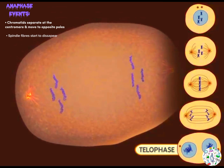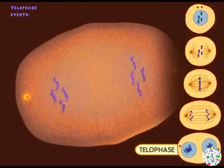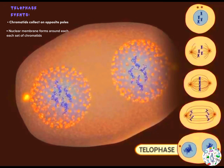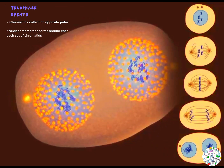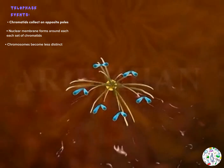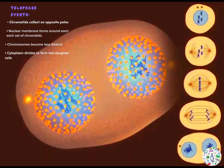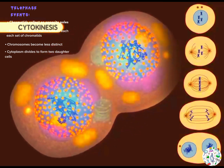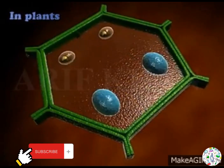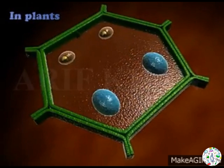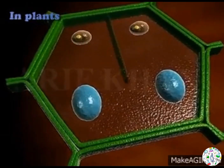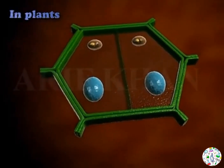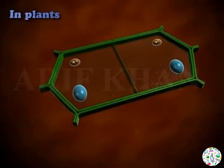The spindle fibers then start to disappear. The last stage is telophase. In this stage the chromatids have collected at the opposite poles of the cell. A nuclear membrane forms on each set of chromatids, which are now referred to as chromosomes. The chromosomes become less distinct, assuming their thread-like appearance. The cytoplasm then divides — this division is known as cytokinesis — leading to the formation of two identical daughter cells. Unlike animal cells, plant cells do not undergo cytokinesis; instead, separation occurs by the use of a cell plate that appears within the cytoplasm and grows to separate the cell into two daughter cells.